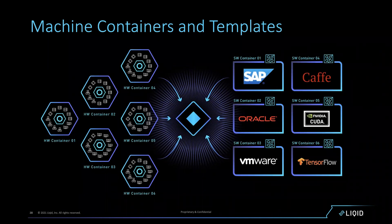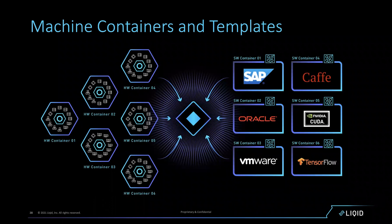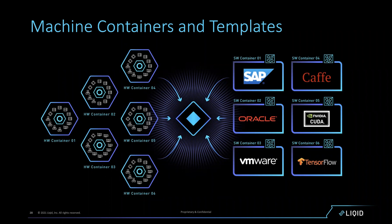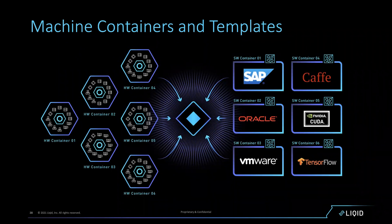One feature we support is hardware containers. Software containers are well understood as the preferred way to deploy software. In our world, even with 50 pieces of hardware configurable 200 different ways, we support templates — hardware containers — to pre-define the exact infrastructure we want in a server. For a tensor workflow, we can pre-define that hardware and with one click launch the physical bare metal infrastructure, then with the next click launch the software container perfectly suited for that machine.